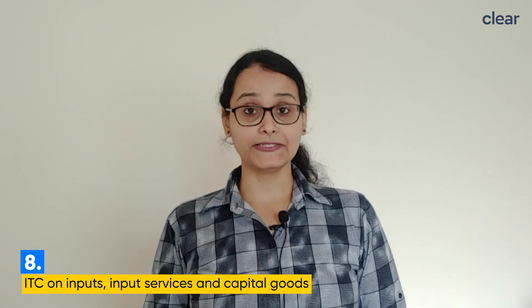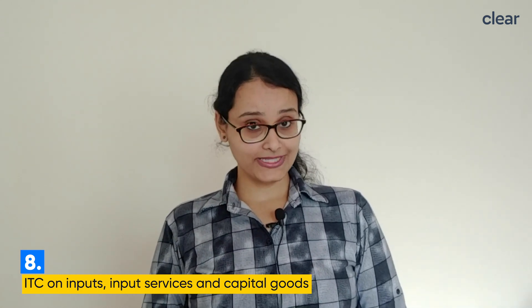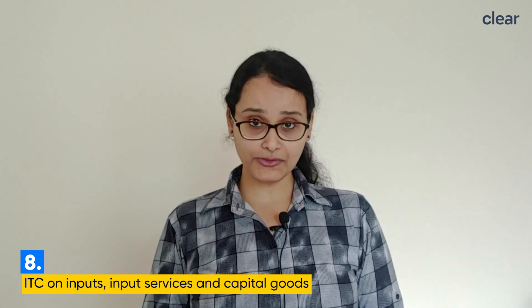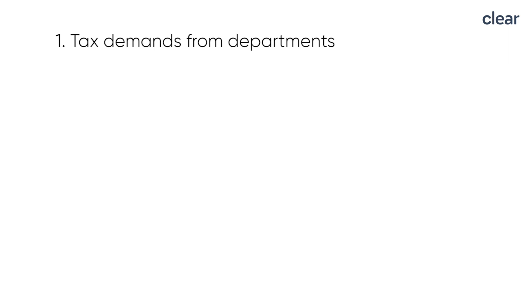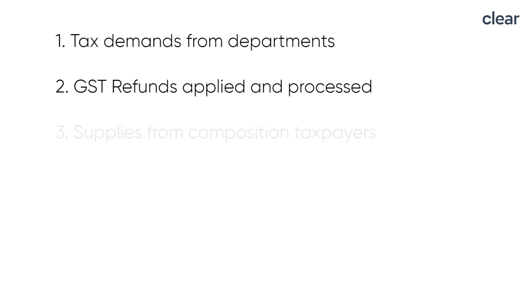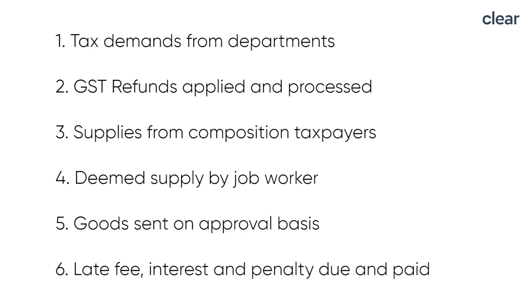Get ready with all details of ITC claimed under different heads — ITC on inputs, ITC on input services, and ITC on capital goods. This bifurcation is optional for FY 2020-21 in table 6 of GSTR9. Also note miscellaneous reporting requirements: tax demands from the department, GSTR3B refunds applied and processed, supplies from composition taxpayers, deemed supply by job workers, goods sent on approval basis, and late fees, interest, and penalties due and paid.